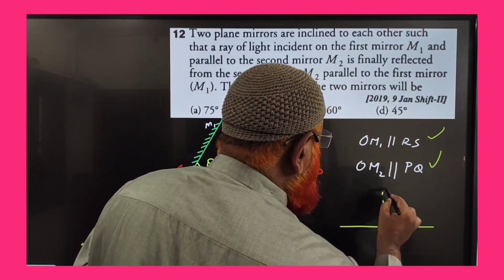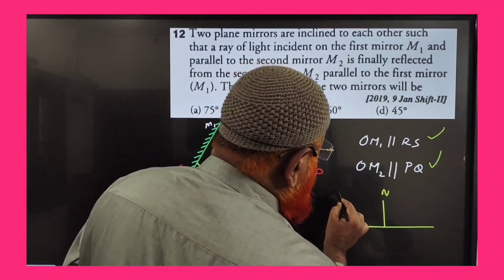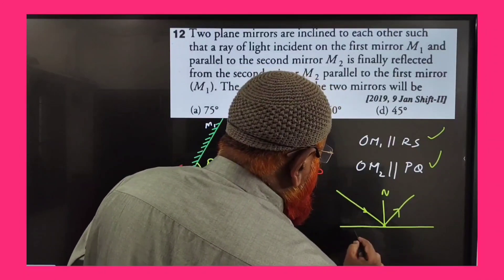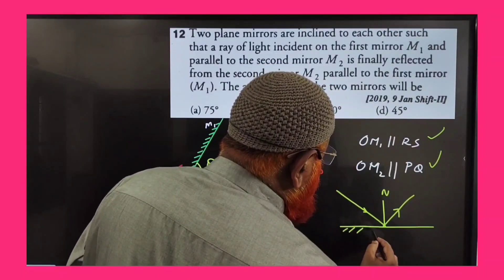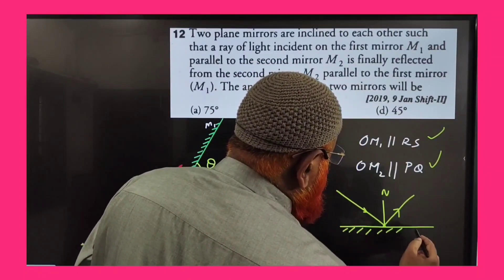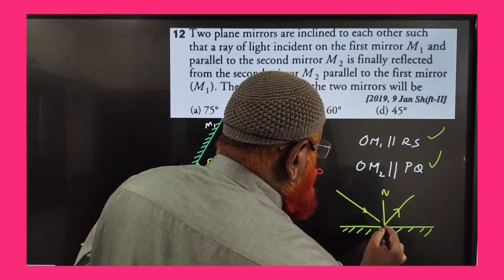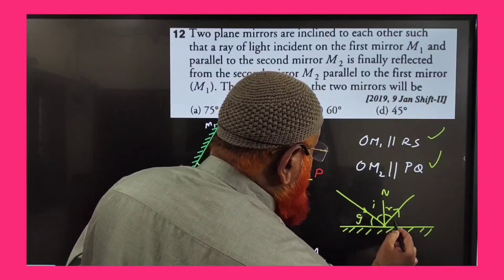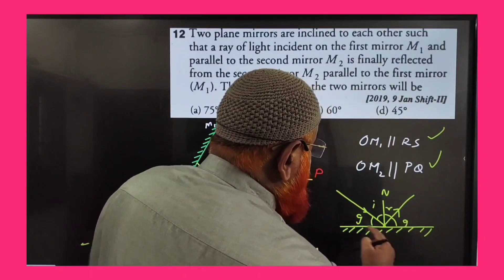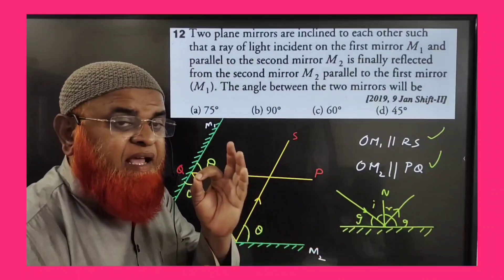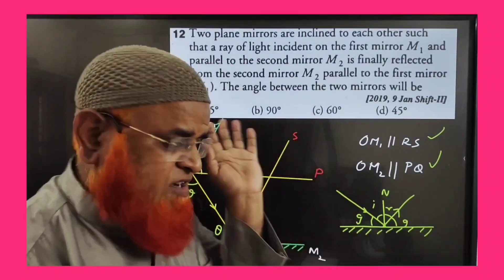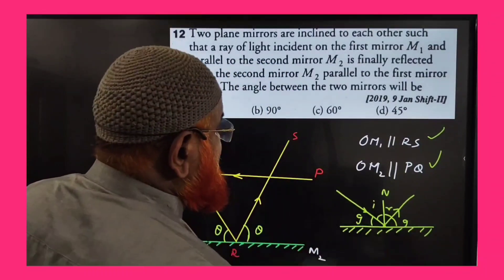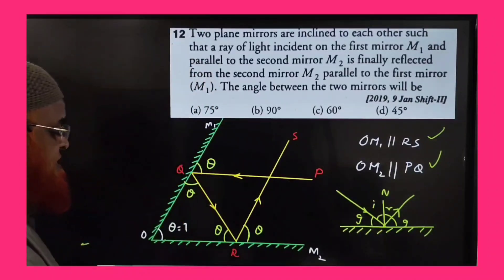We have already discussed glancing angles. When a light ray enters, strikes the mirror and reflects back, this is the angle of incidence and this is the angle of reflection. These two are called glancing angles and they are always equal in reflection. So these two angles are the same, and these two are the same, because they are just like glancing angles.